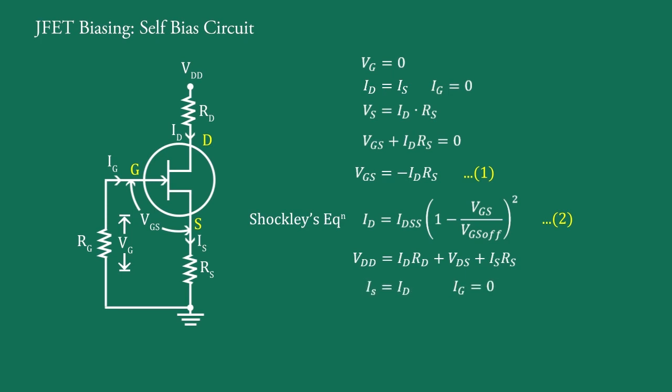Since IG equals zero, therefore IS is equal to ID. And therefore we can write VDD equals ID RD plus VDS plus ID RS.